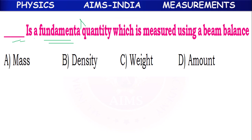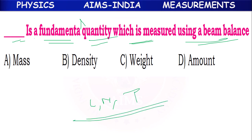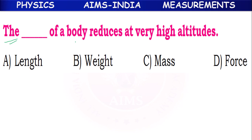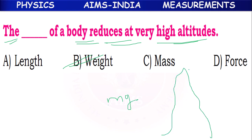Mass is a fundamental quantity measured using a beam balance. The fundamental quantities are length, mass, and time (LMT). The dash of your body reduces at certain altitudes — answer: weight. Weight formula: W = mg. At higher altitudes, the value of g decreases, so the weight value also decreases automatically.